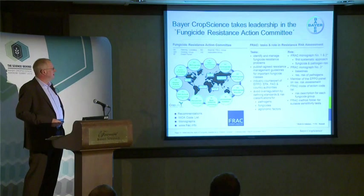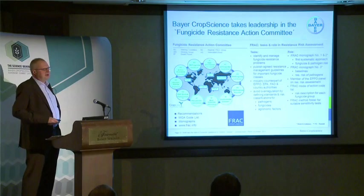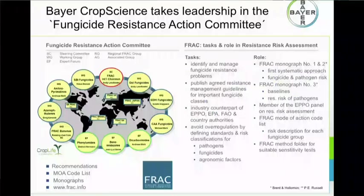You can find monographs describing our work on the FRAC webpage, including fungicide-pathogen risk assessment tables. We describe how to measure a baseline — a set of data describing the sensitivity of a population of a particular pathogen in a particular crop at the time prior to the product launch. This is necessary to later determine if a sensitivity shift has occurred. There is also a FRAC mode of action code list describing the risk for each fungicide class.